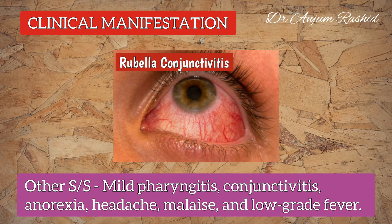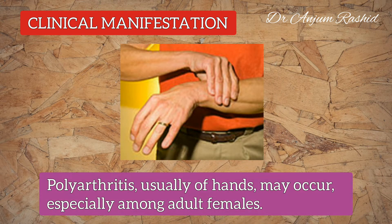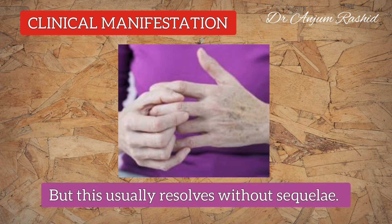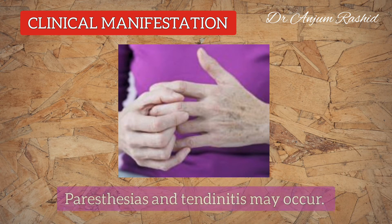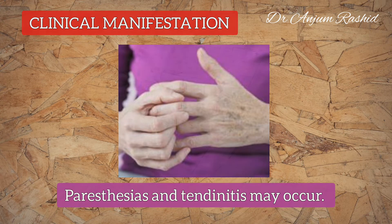Other manifestations of rubella include mild pharyngitis, conjunctivitis, anorexia, headache, malaise, and low-grade fever. Polyarthritis, usually of the hands, may occur especially among adult females, but this usually resolves. Paresthesias and tendinitis may also occur in rubella.